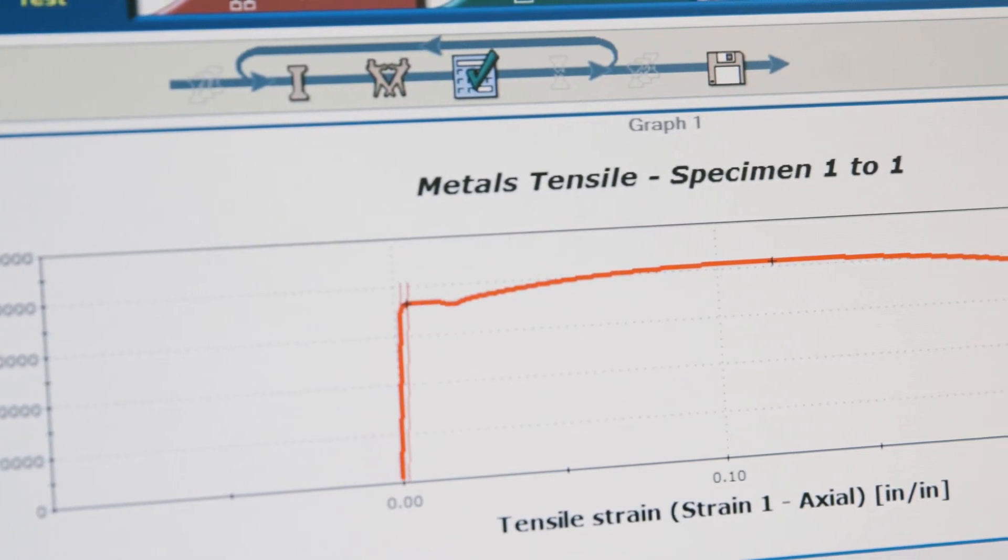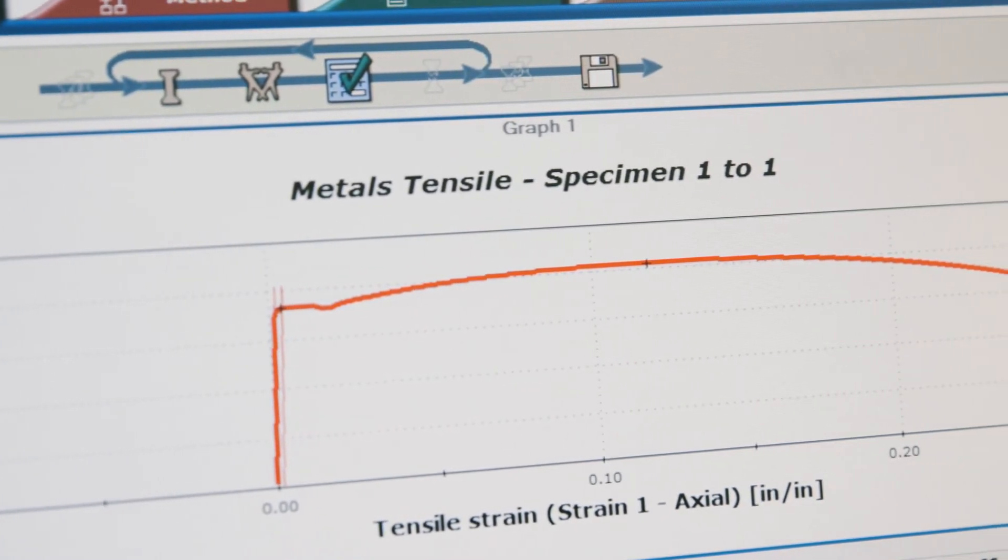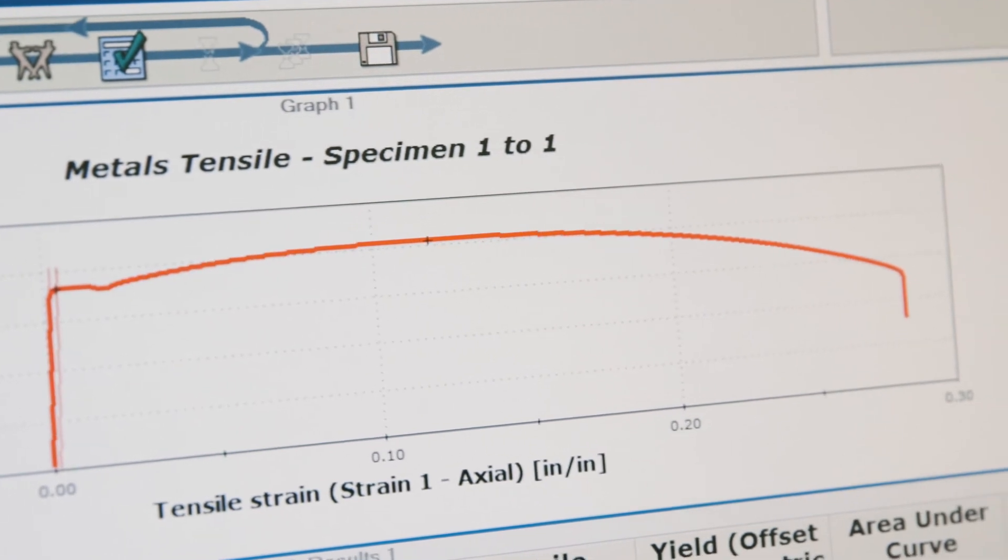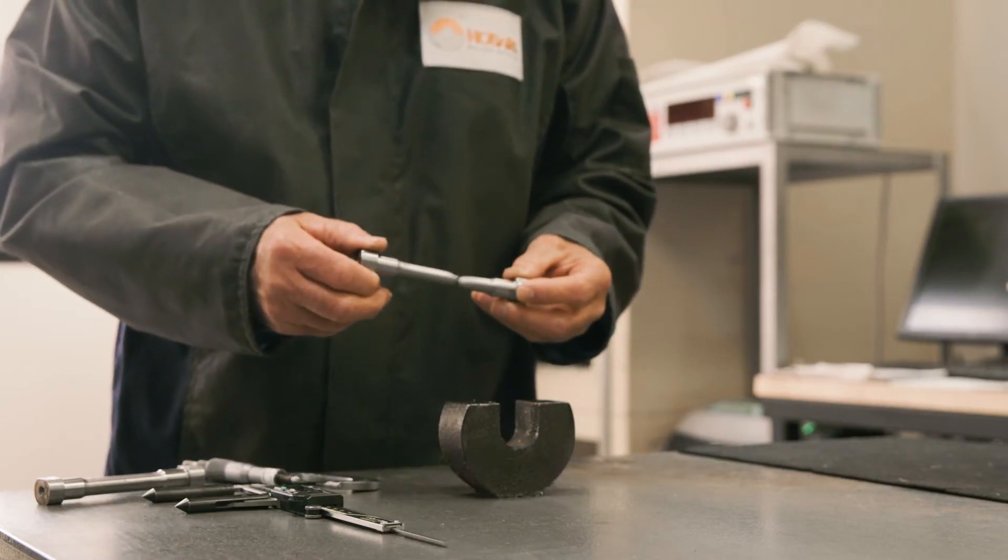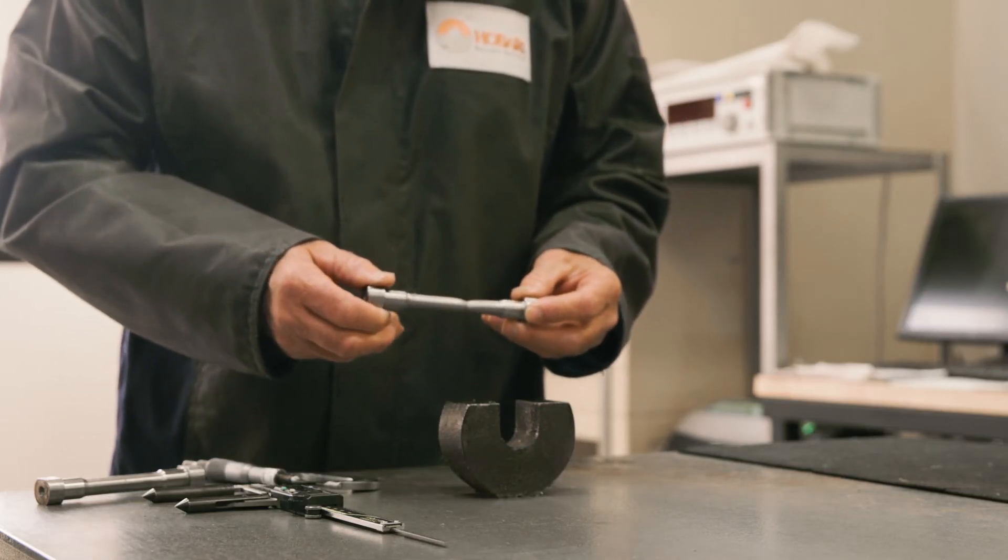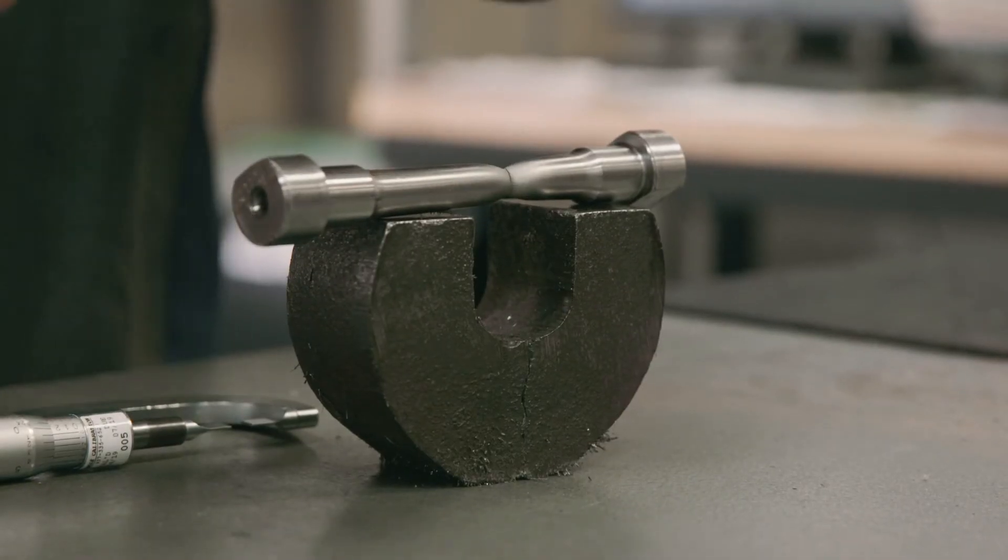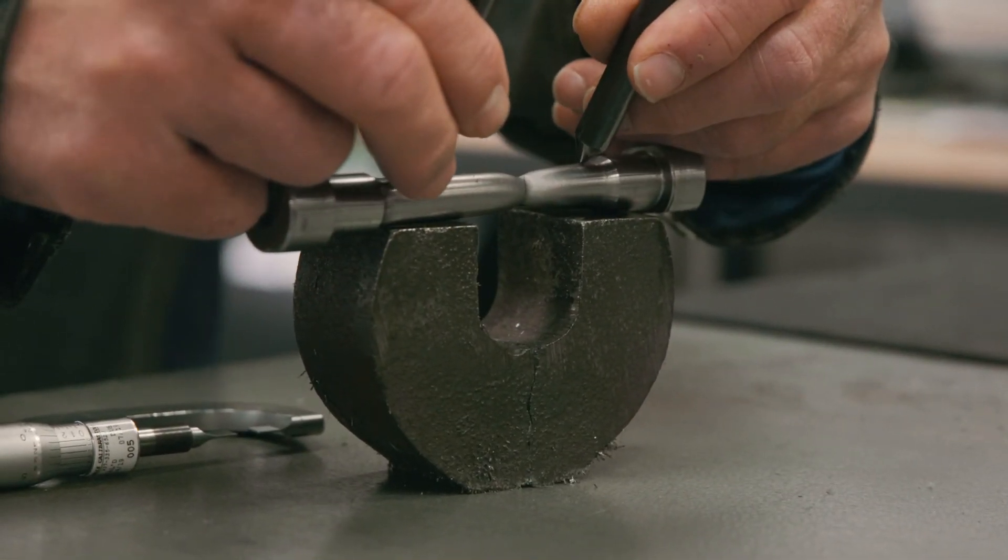Yield strength is defined as the stress level at which the material begins to deform and will not go back to its original dimension. Percent elongation is a measure of ductility. It is determined by comparing the length of the sample after with the length of the sample before testing.